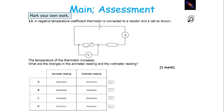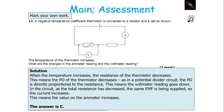As the temperature of a thermistor increases, the resistance of a thermistor will decrease. This means as the temperature increases, the potential difference will also decrease, because potential difference and resistance are directly proportional in a potential divider circuit. So the voltmeter reading across the thermistor will go down. As the total resistance has decreased with the same EMF being supplied, the current will increase, so the ammeter value goes up.